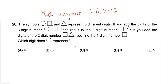Hello friends, today we will be doing Math Kangaroo level 5 and 6, year 2016, question number 28. The symbol circle, square, and triangle represent three different digits. If you add the digits of the three-digit number circle-square-circle, the result is the two-digit number square-triangle.